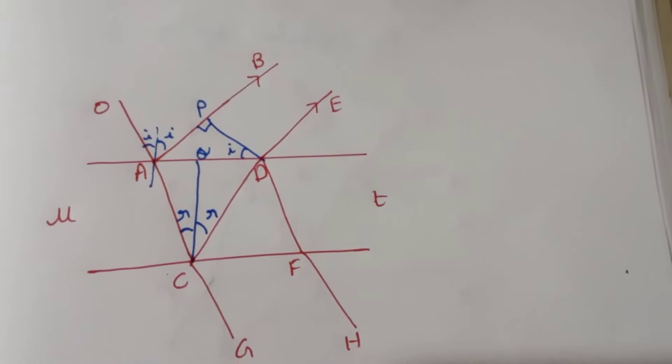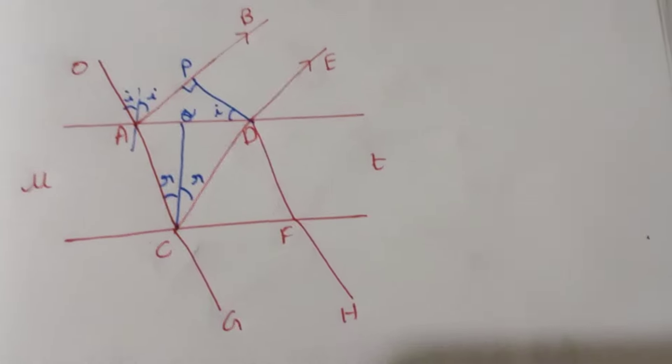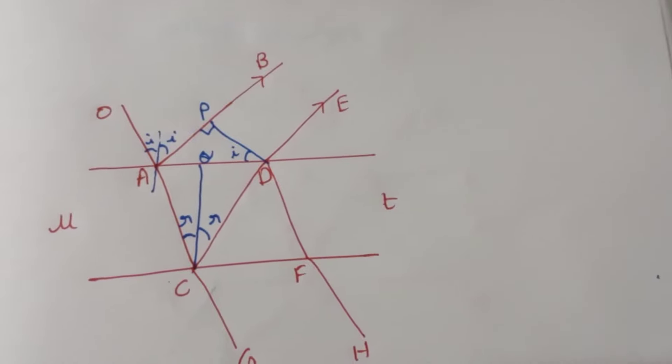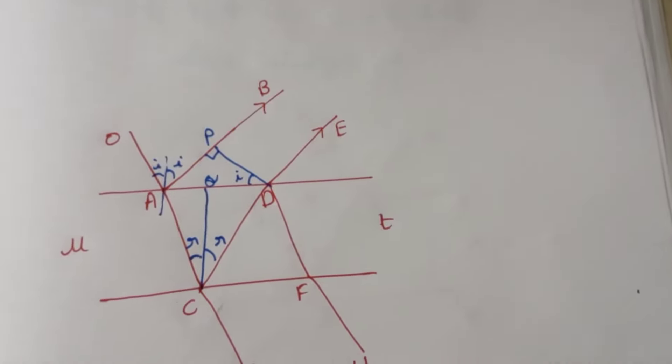In the thin film reflected system, when two waves superimpose, these are the conditions for bright fringe and dark fringe formation.